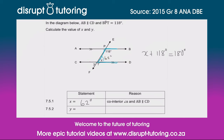When that intersection happens, we know that that angle is going to be equal to that angle. So what is y? We know that y is 62 degrees — the same as x — and the reason for that is because vertically opposite angles are equal. And that's it — that will get you all three marks for this question.